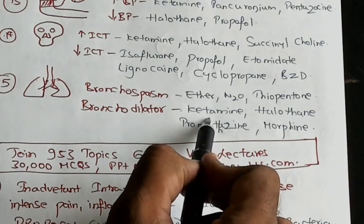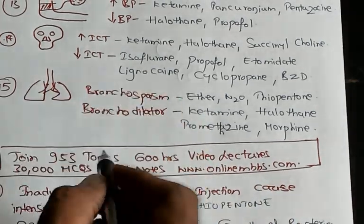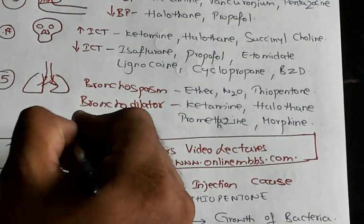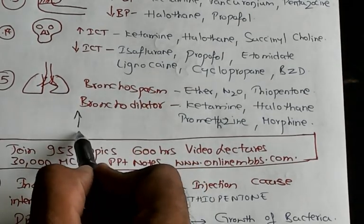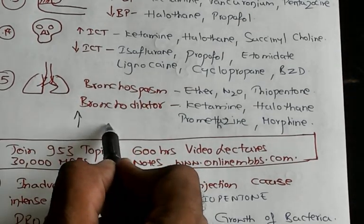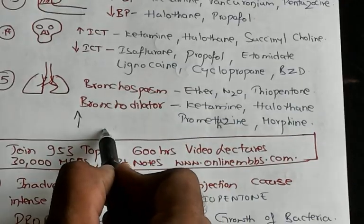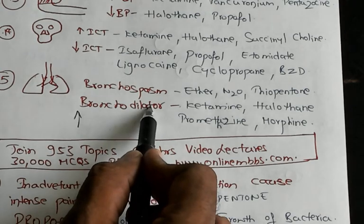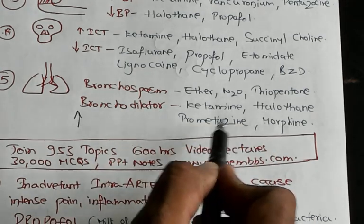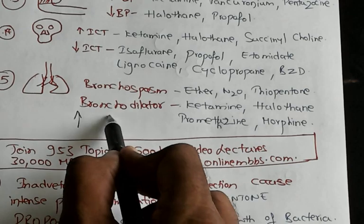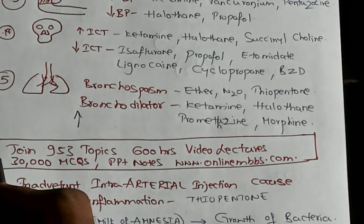Whereas ketamine — anything about ketamine — ketamine increases the diameter of the bronchi. Ketamine is a bronchodilator. So ketamine, halothane, promethazine, and morphine lead to bronchodilation. That is what you need to remember.